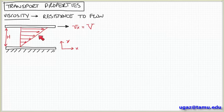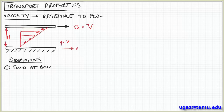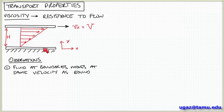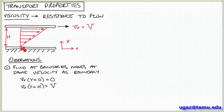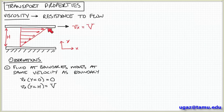The question is what is happening to the fluid in between these plates? The first observation is that the fluid at the boundaries — the upper and lower plates — moves at the same velocity as the boundaries. At the lower plate, which is stationary, the velocity is zero, so the velocity of the fluid immediately adjacent to that plate would also be zero. Similarly, at the top, this plate is being pulled so that it's moving in the x direction at velocity V, so the fluid immediately in contact with that plate is also moving with that same velocity.